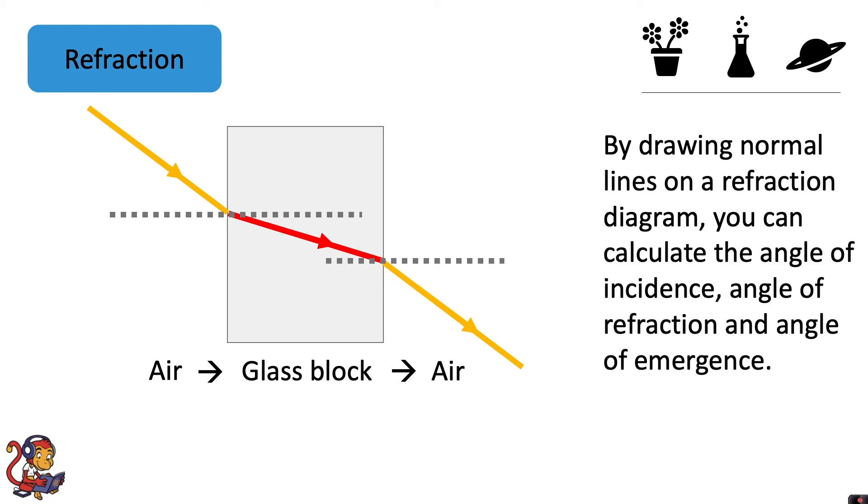By drawing normal lines on a refraction diagram, you can calculate the angle of incidence, angle of refraction and angle of emergence. So here's the angle of incidence between the normal and the incident ray, the angle of refraction and the angle of emergence.